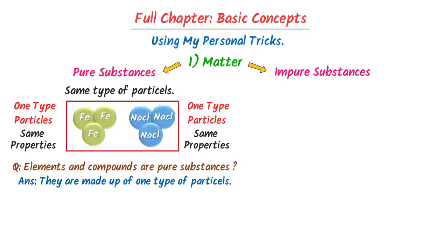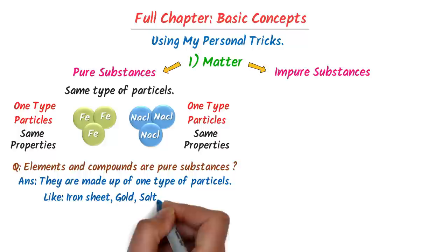Examples of pure substances include iron sheet, gold, sodium chloride, silver, and others.